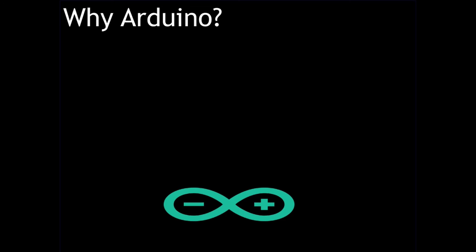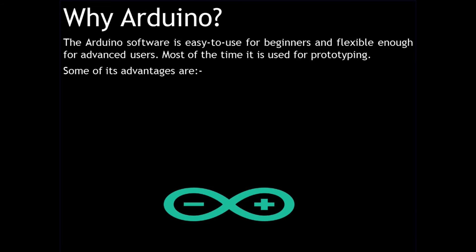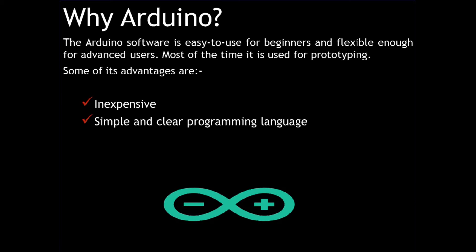There are so many microcontrollers in the electronics world, so why should we choose Arduino? This is because Arduino software is easy to use for beginners and flexible enough for advanced users. Most of the time it is used for prototyping. Some of its advantages are: it is inexpensive — the full kit costs less than $50, which is inexpensive compared to other microcontrollers. It has a simple and clear programming language for programmers as well as beginners, and it is open source with a large community to support when external support is needed.